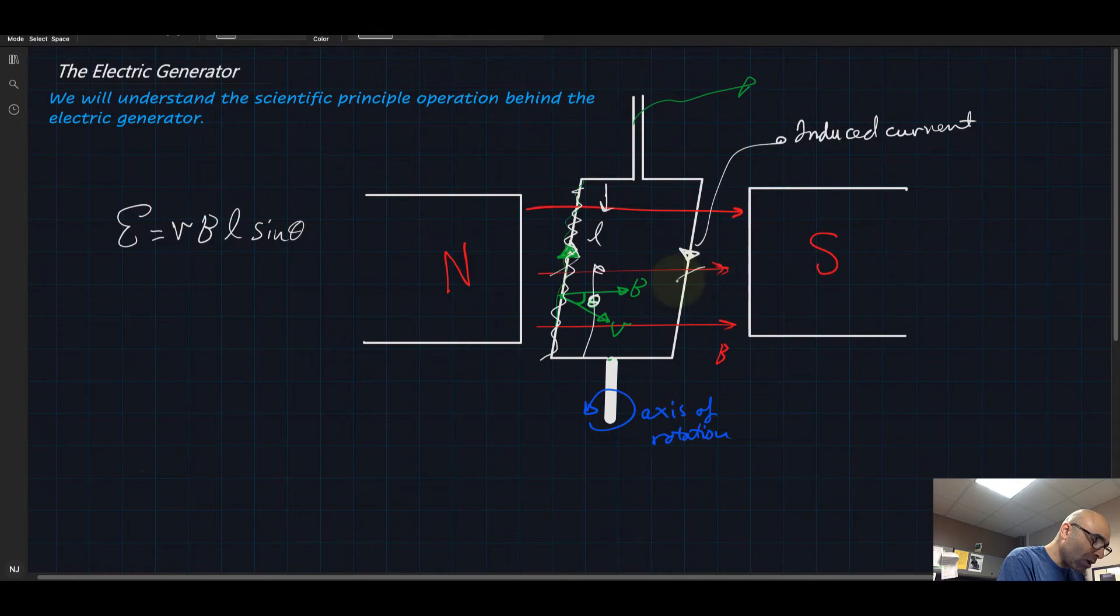And as I said, this is theta. Now we have one here and one here, so E is actually twice as much. And as I mentioned, you're not going to put one loop, you're going to put hundreds of loops. So the E I'm gonna say is 2NvBL sine theta.